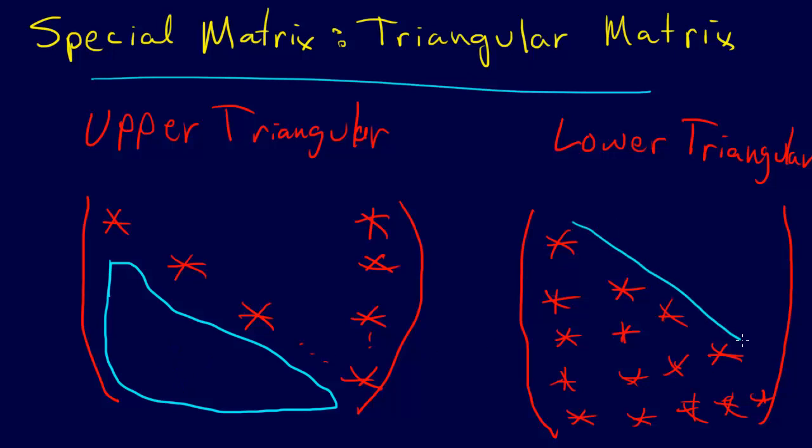And that's what makes this a lower triangular matrix—all of these above the diagonal are zero. It's not necessary that every single entry be non-zero, but the general tendency will be many non-zero entries. So this is an upper triangular matrix, and this is a lower triangular matrix.